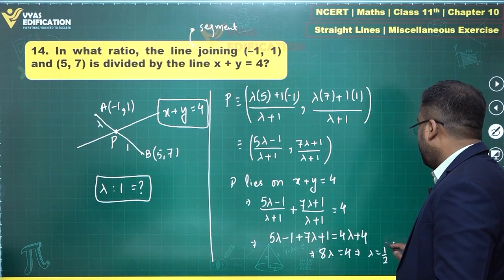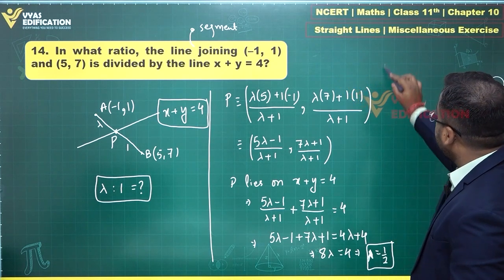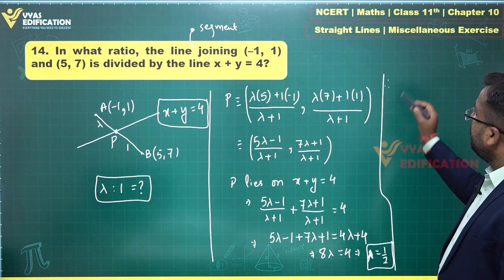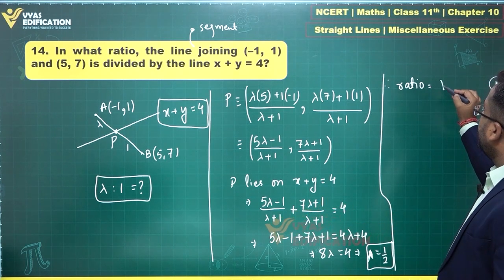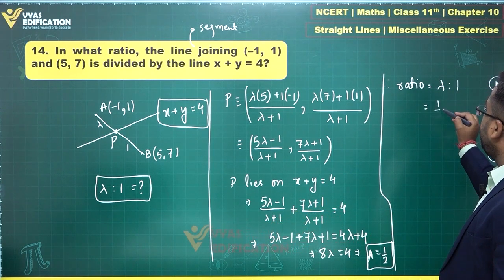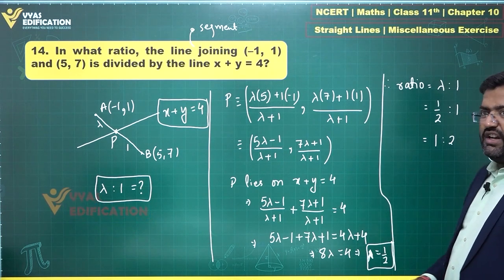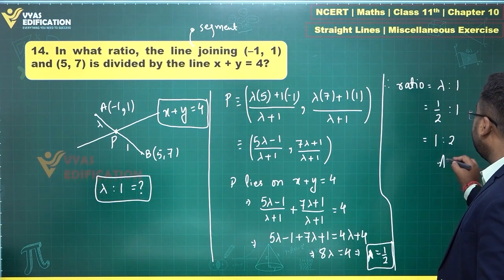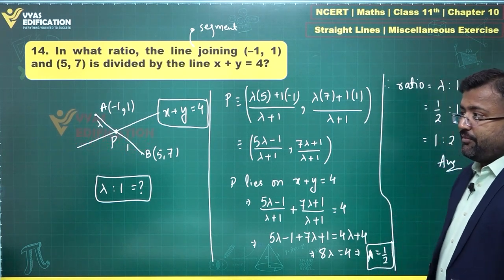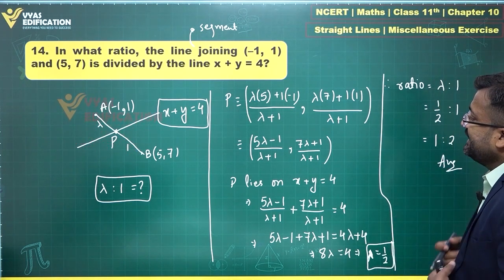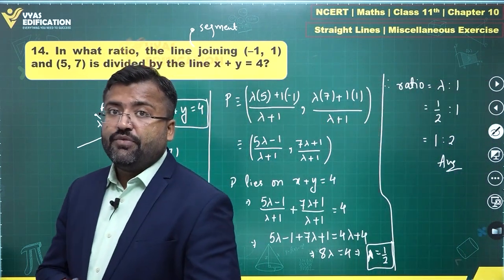Therefore lambda equals 4 by 8, which is 1 by 2. The required ratio is lambda to 1, which is 1/2 to 1, or simply 1 is to 2. That is the answer for this question.